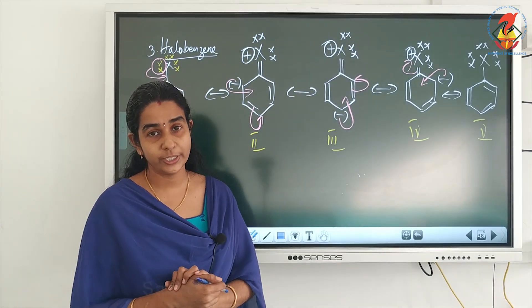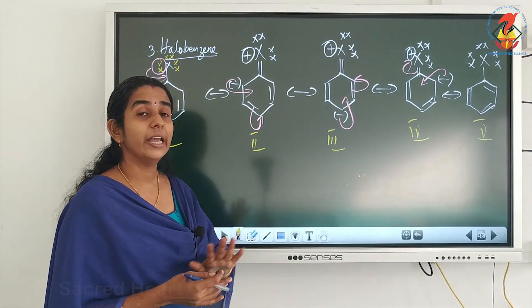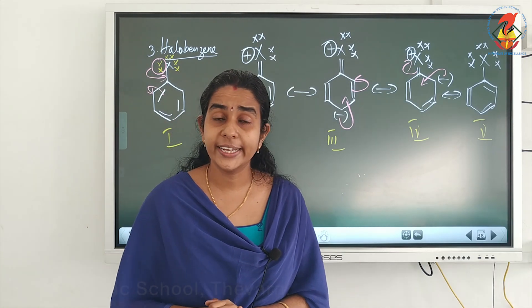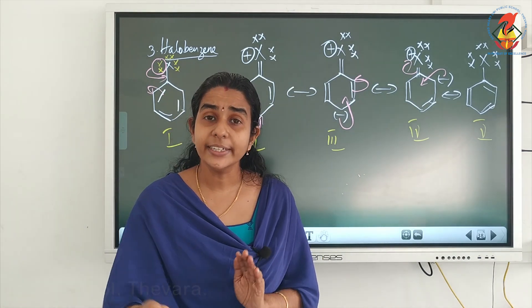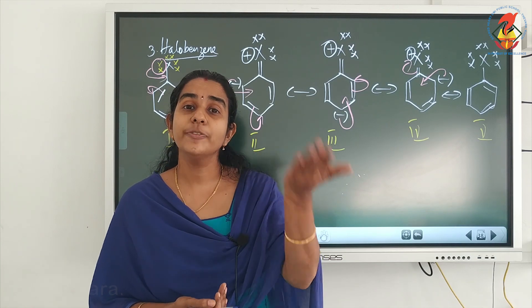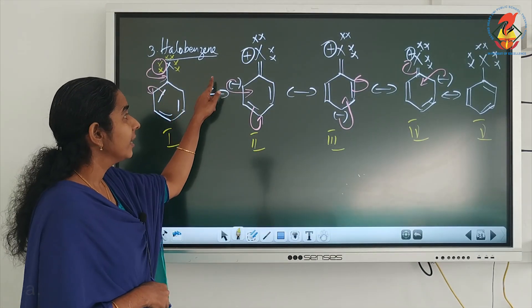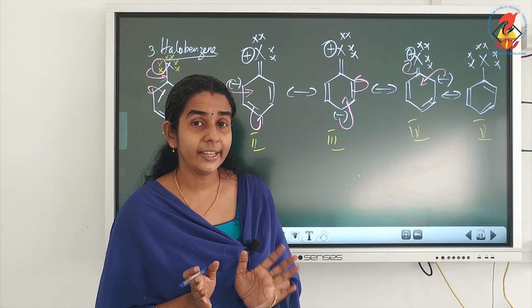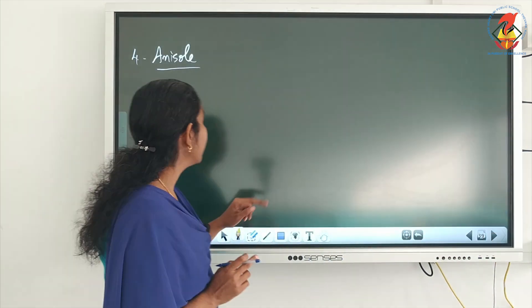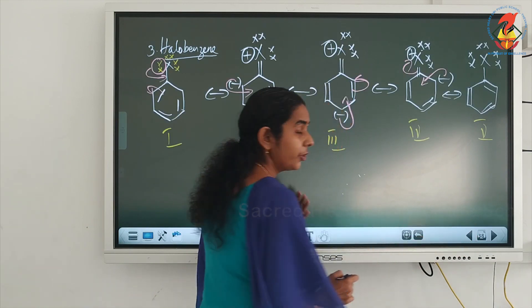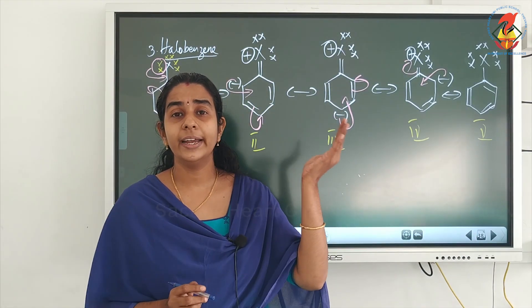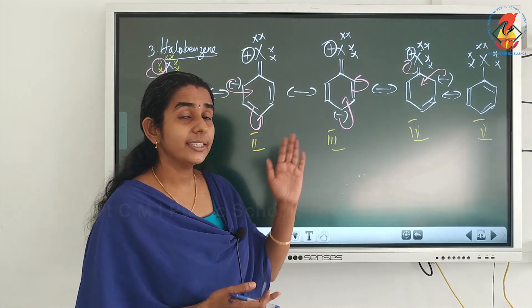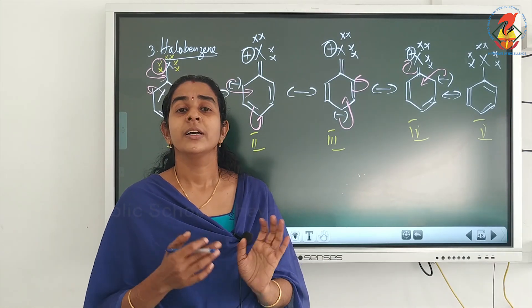Here also we get 5 resonating structures, and structures 1 and 5 are the same. Just like NH2, OH, and halogen groups, when X is attached to benzene ring, X activates the ring due to resonance by increasing electron density at ortho and para positions, so electrophiles attack at ortho and para. Therefore, X is ortho-para directing and activating.